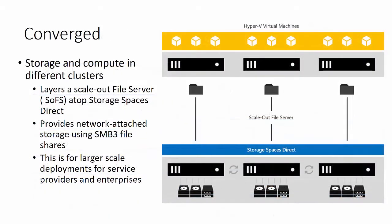In a converged environment, storage and compute are in different clusters. It layers a scale-out file server atop Storage Spaces Direct and provides network-attached storage using SMB3 file shares. This is really for highly scalable environments for service providers and enterprises, with Storage Spaces Direct on the bottom and all the shares and the scale-out file system on top.